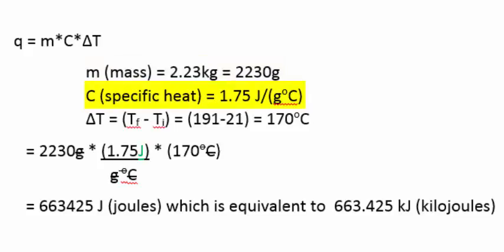The specific heat we're given is 1.75 joules per gram degree C, and I'm emphasizing the units. The delta T is the change in temperature, and that is the final temperature less the initial temperature. So first, you enter the final temperature, and then you subtract from it the initial temperature.